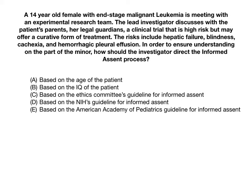This is a tricky one. The answer is A — you always base informed assent on the age of the patient. In this case, we have a 14-year-old female, so when you give information to the minor, you do it as if you're communicating with a 14-year-old. The description of the procedure, risks, alternatives, and benefits all have to be geared to a 14-year-old's understanding. After all, how could they give informed assent if you're describing it in complex medical terms that maybe only an adult would understand? You have to present it accessibly, while still covering all required elements.